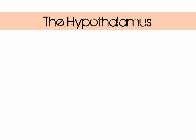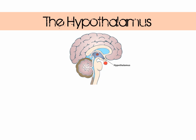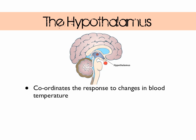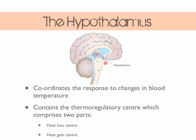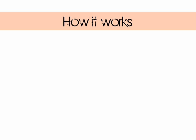All of these processes are carried out without you even thinking about it. So how does it happen? It's down to a small region of your brain known as the hypothalamus. The hypothalamus coordinates an appropriate response to changes in blood temperature. One section is known as the thermoregulatory centre, made up of the heat loss centre and the heat gain centre. The heat loss centre controls mechanisms for losing heat, and the heat gain centre controls mechanisms for gaining heat.